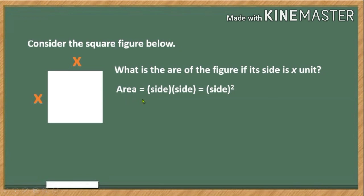...and in this case a square figure, is equal to the product of its side. And since this is a square figure, we can simply say that the area of a square is equal to the square of the measure of its side.